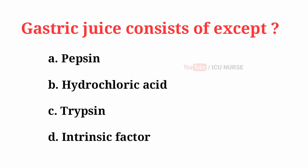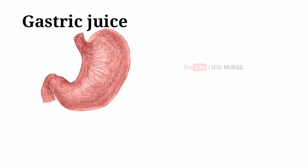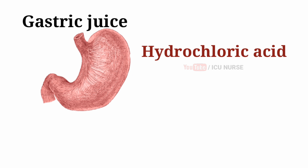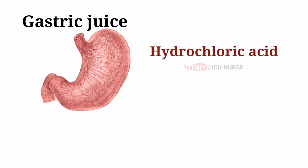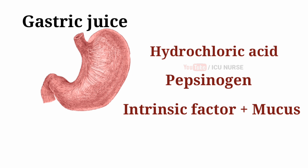Gastric juice consists of — the correct answer is C: Trypsin. Gastric juice is the digestive liquid secreted by the glands of the stomach. It is a thin, colorless, acidic liquid containing primarily hydrochloric acid, pepsinogen, intrinsic factor, and mucus.